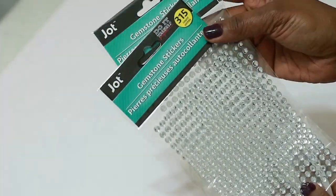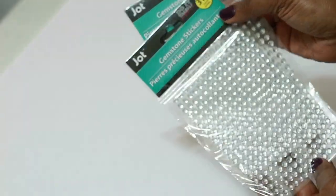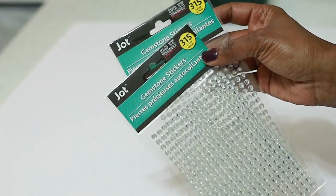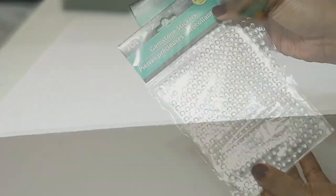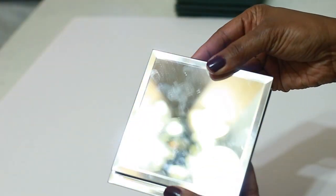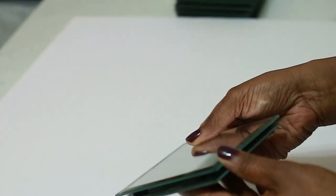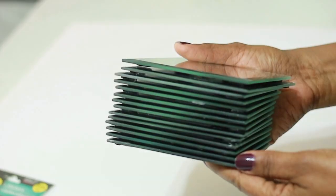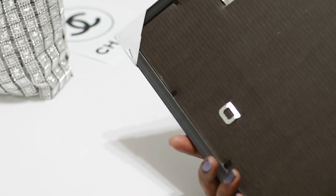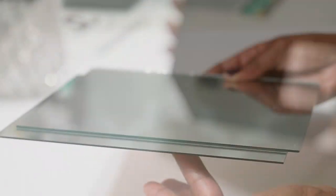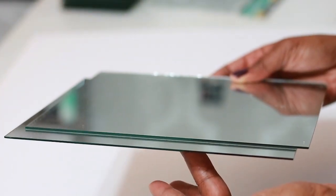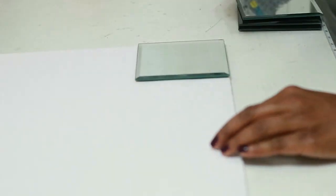I picked up some of these gemstone stickers. They are by Jot, very good quality stickers, and they also have the adhesive on the back. I'm going to be using one white foam board, these five by five mirrors, two eight by ten mirrors, and I'm going to remove them from their frames.